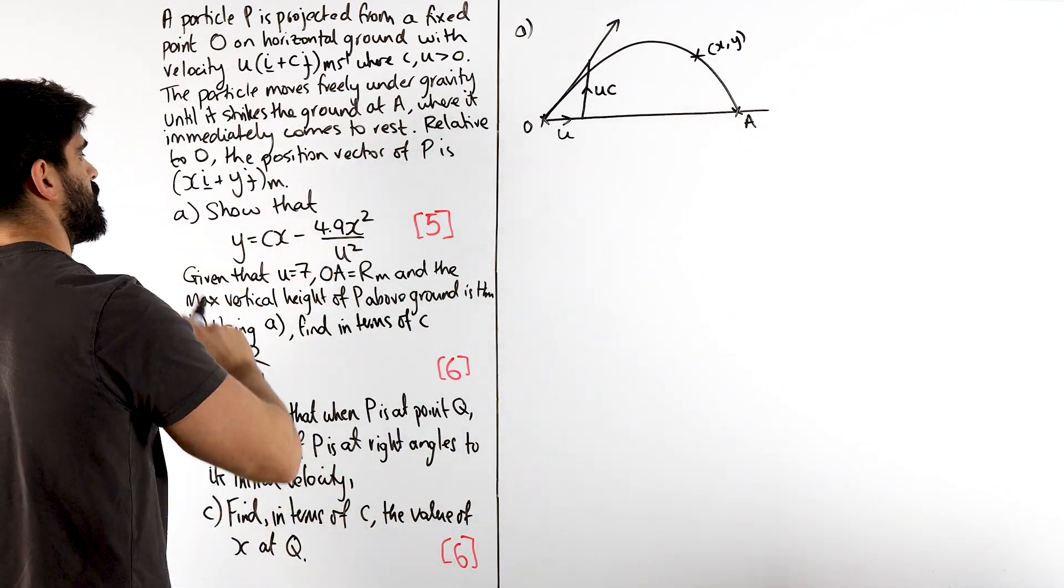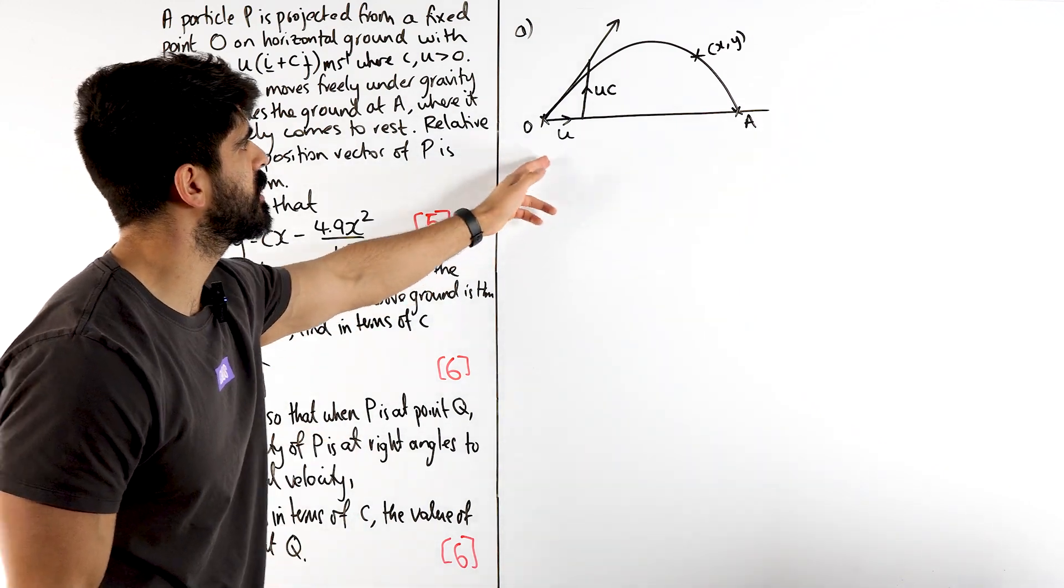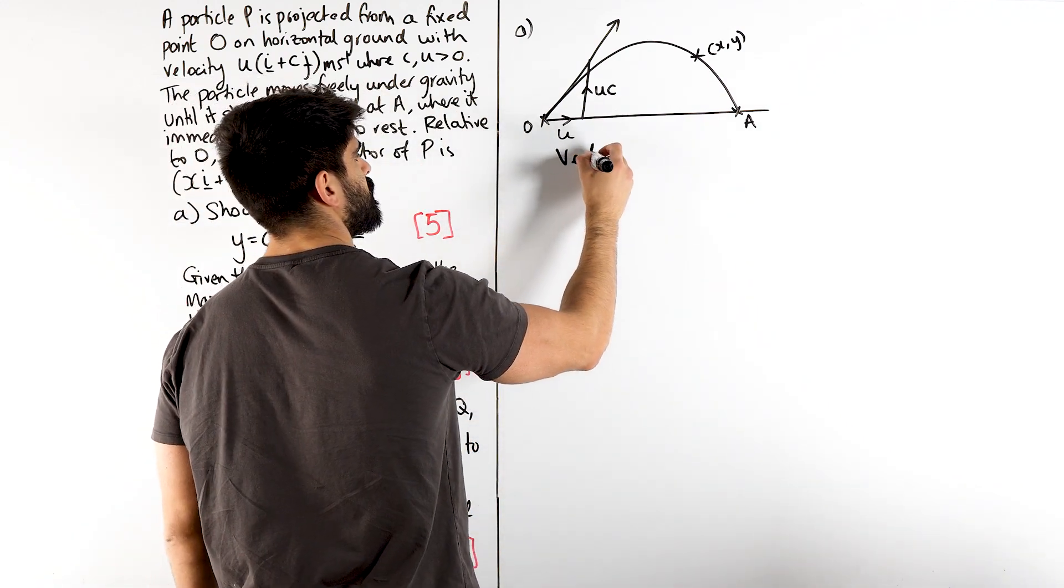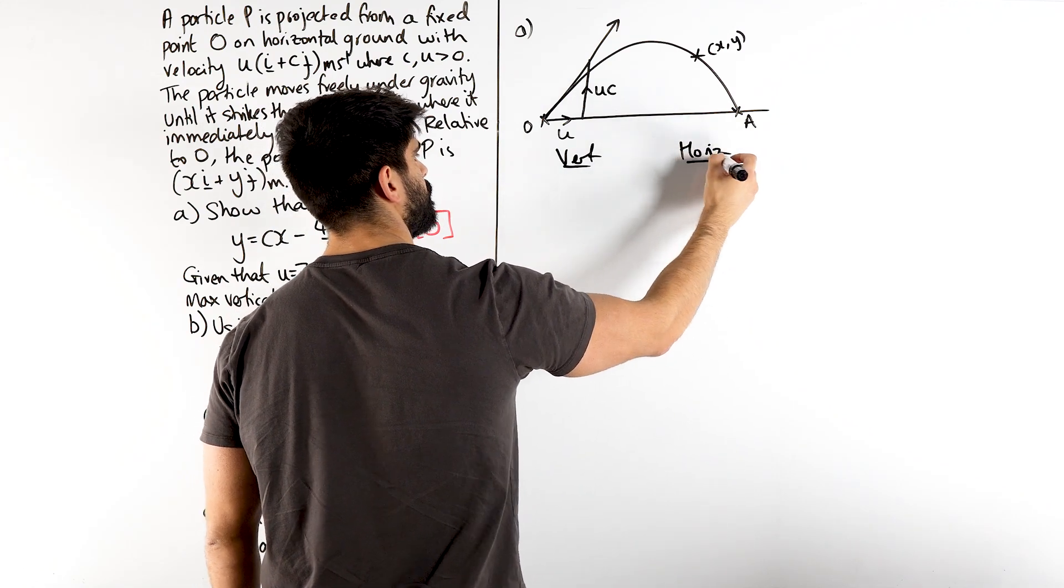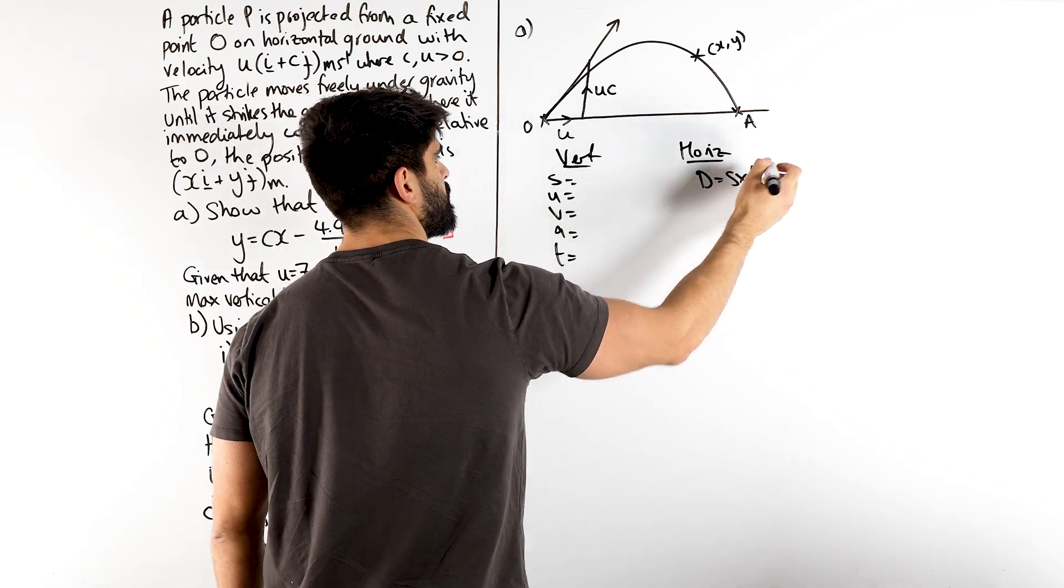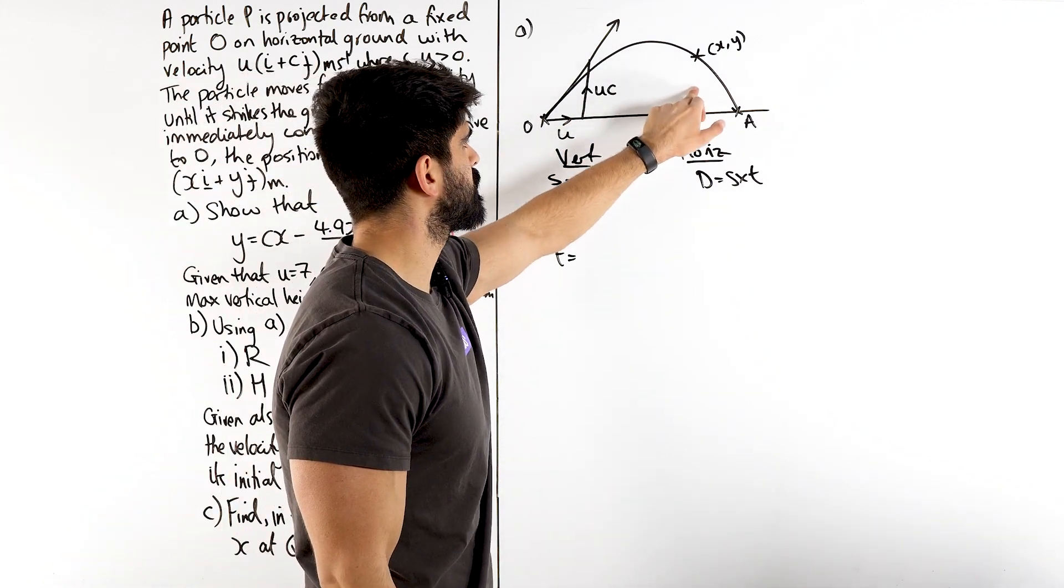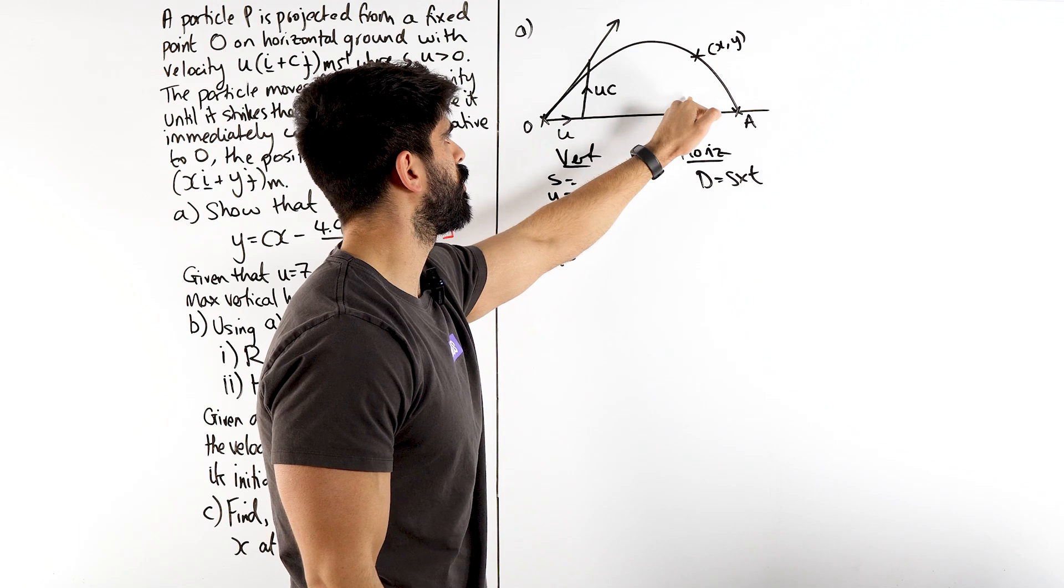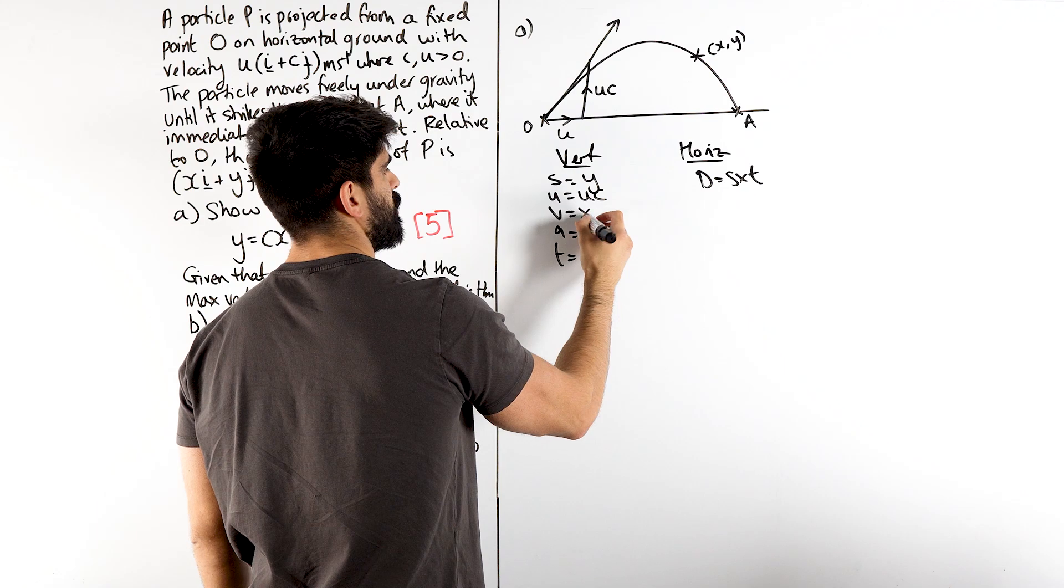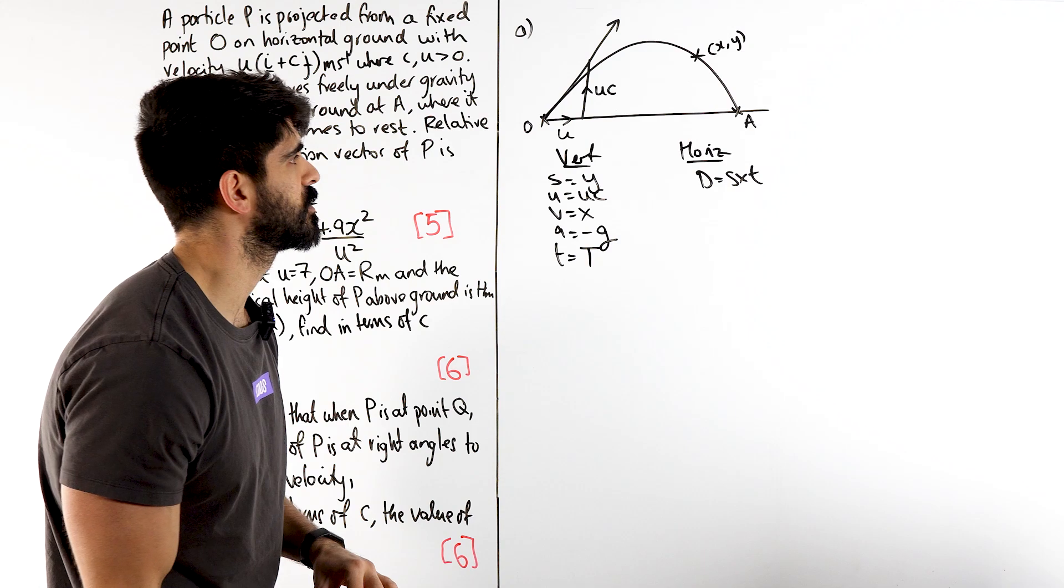But they want you to find this. Now, when I see stuff like this, Y in terms of X, I'm thinking Cartesian equations, but I already know these are represented parametrically, as we discussed in the last video, right? So, here's my vert, here's my horis. So, you're going to find this. Generally, the vertical distance above where we have been projecting from is Y. The vertical speed is UC. We don't know the velocity, generally. We have minus G, and then capital T. Remember, we're going to write down the parametric forms.